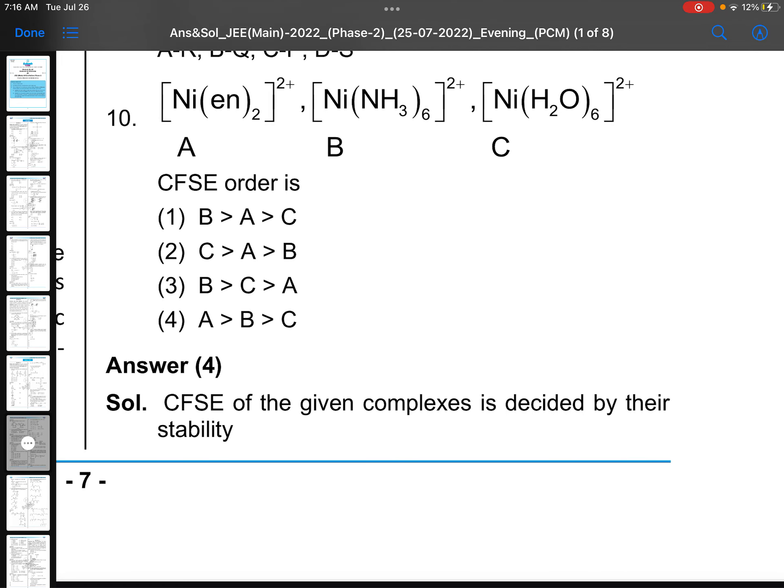These type of questions are very common from the coordination chemistry. Nickel with EN taken 3, Ni(NH3) taken 6, Ni(H2O) taken 6. The printing mistake it is, it should be three, Ni(EN)3. So that is better. A is better than B, better than C. Stronger the ligand and more pairing, then that will be much better. CFSE order ABC, last option.